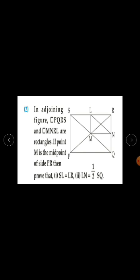Question number 2: In the adjoining figure, quadrilateral PQRS and quadrilateral MNRL are rectangles. If point M is the midpoint of side PR, then prove that SL is equal to LR and LN is half of SQ.